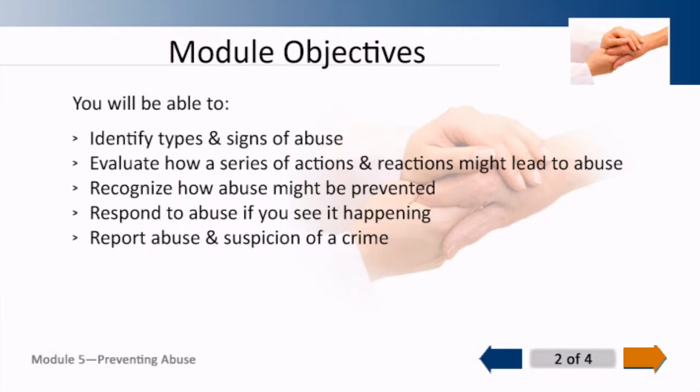Welcome to Module 5 of the Hand-in-Hand Training: Preventing Abuse. For this module you will be able to identify types and signs of abuse, evaluate how a series of actions and reactions might lead to abuse, and recognize how abuse can be prevented.